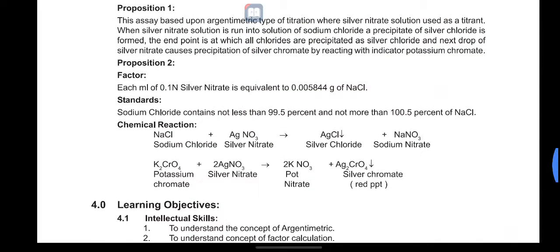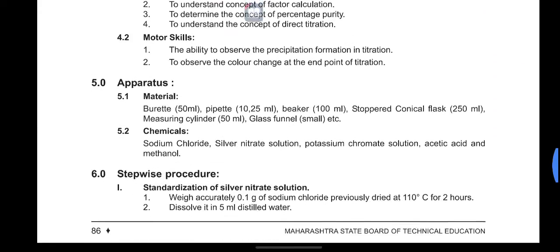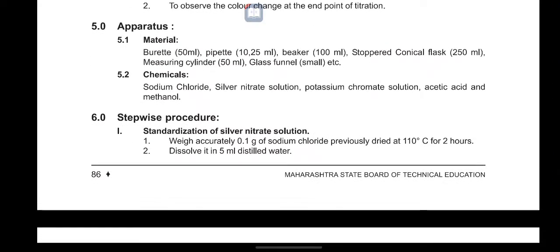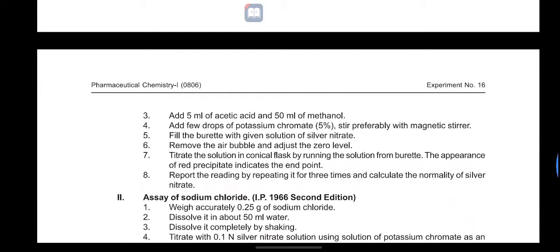This confirms the argentometric type of reaction used in the principle. For standardization of the silver nitrate solution: weigh accurately 0.1 gram of sodium chloride previously dried at 110°C for two hours, dissolve in 5 ml distilled water, add 5 ml acetic acid and 50 ml methanol, and add a few drops of 5% potassium chromate indicator.